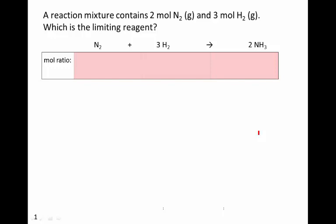So this is very easy. We simply use the coefficients in the balanced equation. Every 1 mole of nitrogen needs 3 moles of hydrogen to react with it and they produce 2 moles of ammonia.